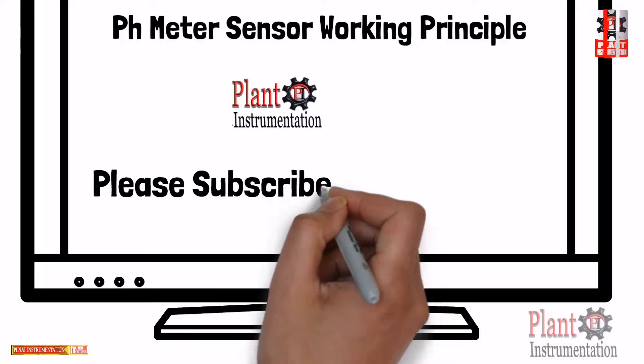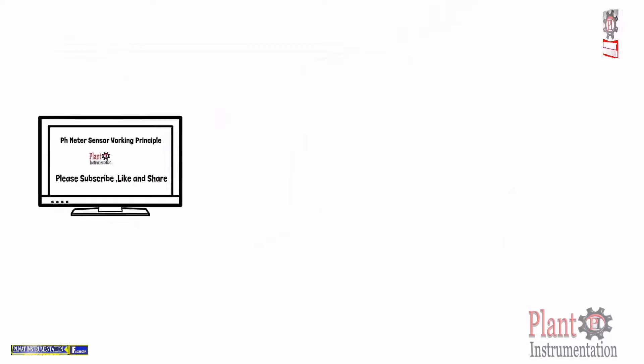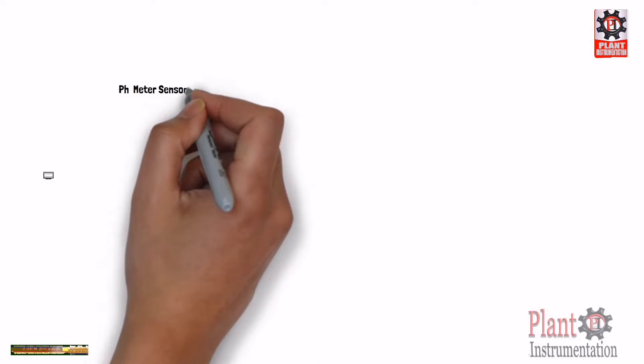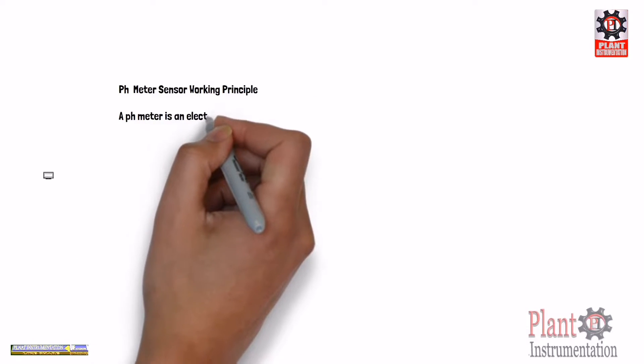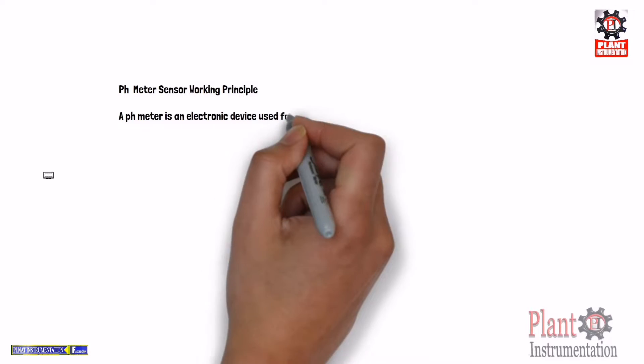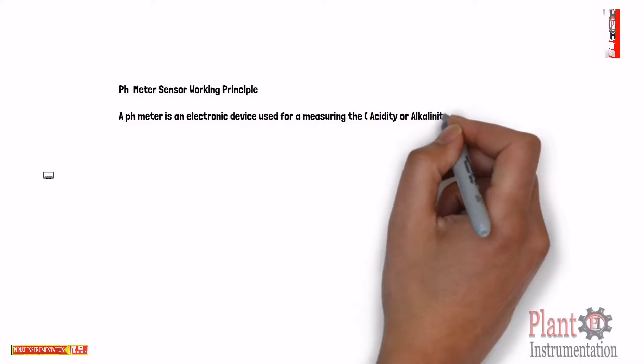A PH meter is an electronic device used for measuring the acidity or alkalinity of a solution. PH means power of hydrogen ions or potential of hydrogen ions.